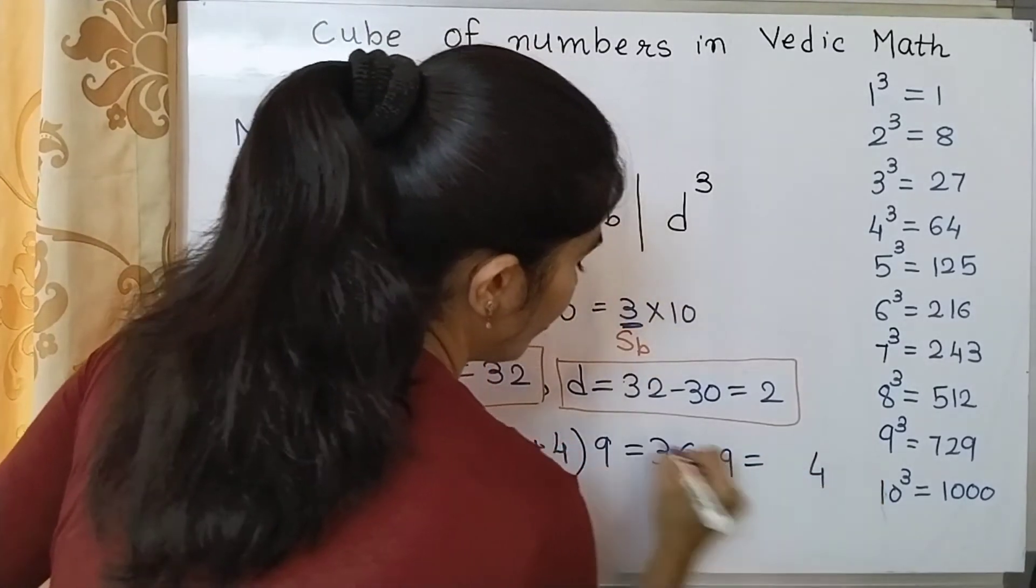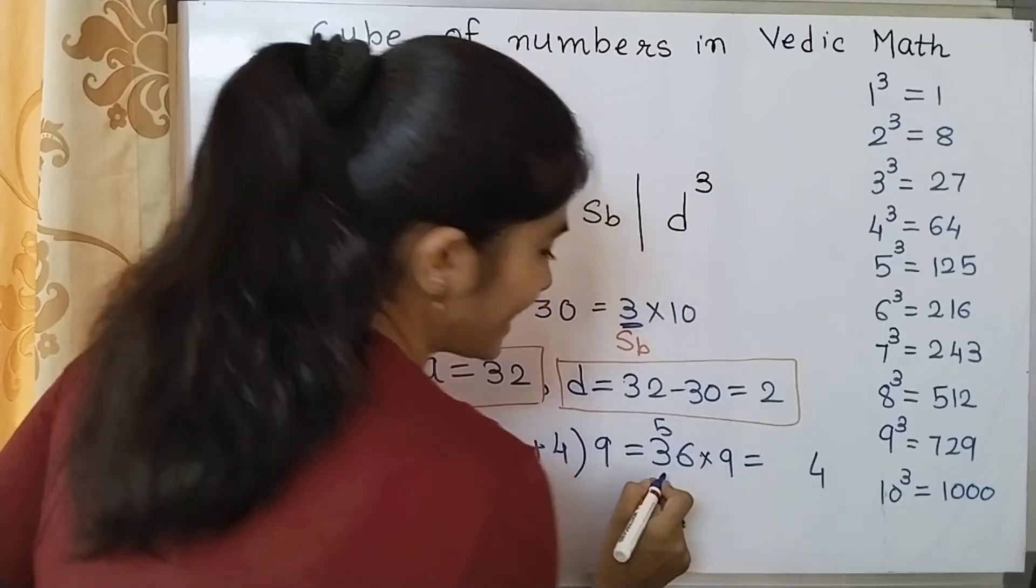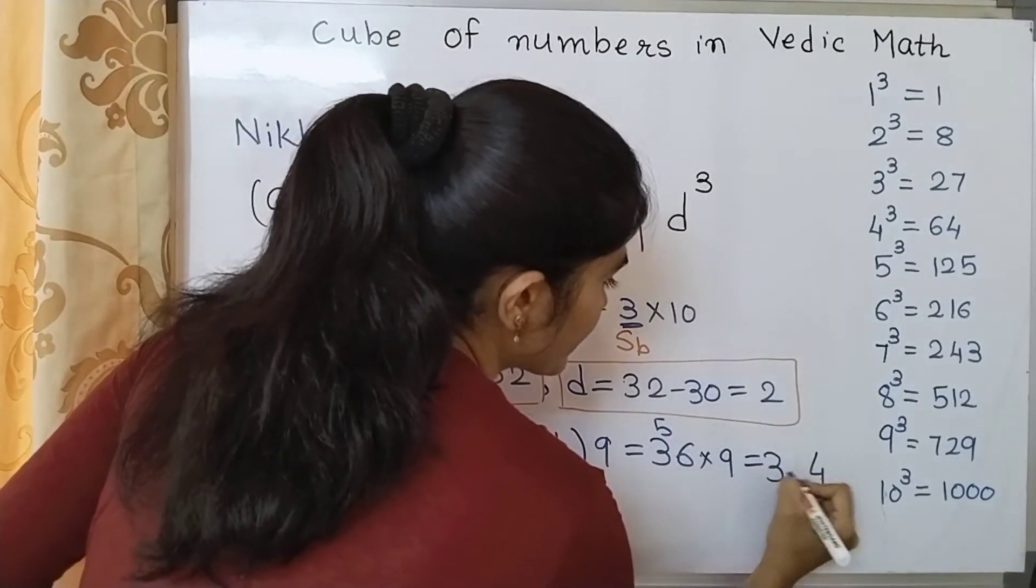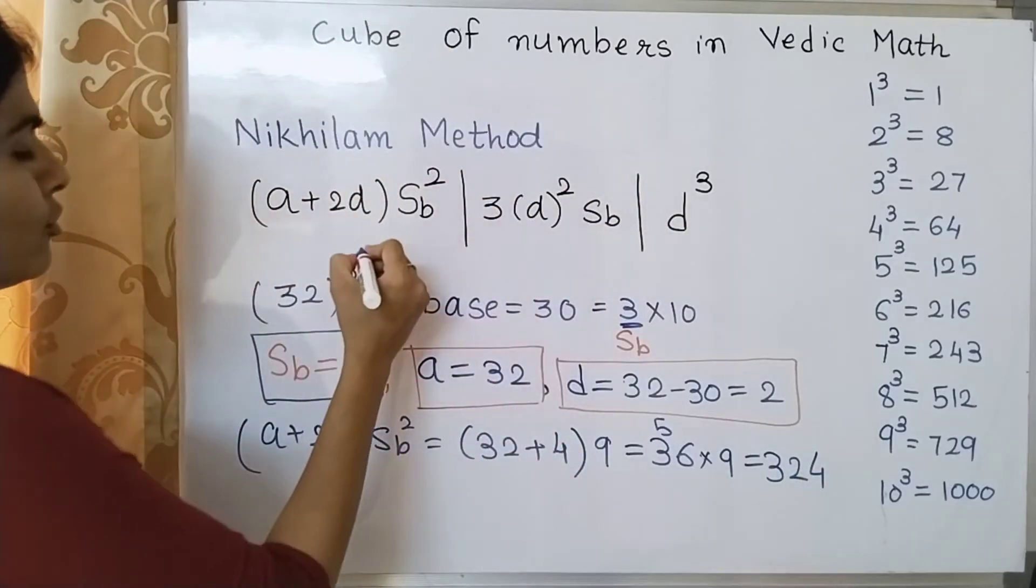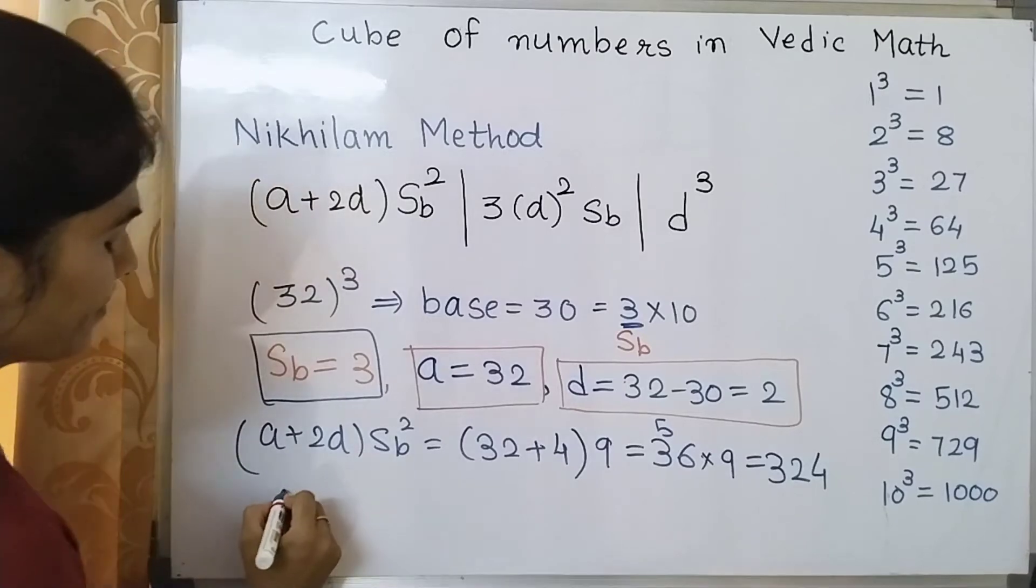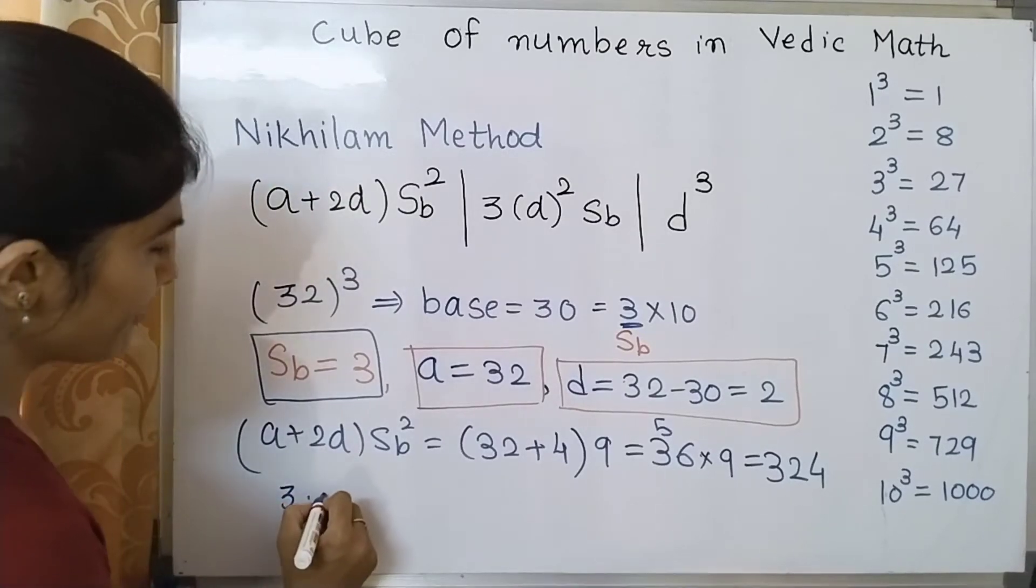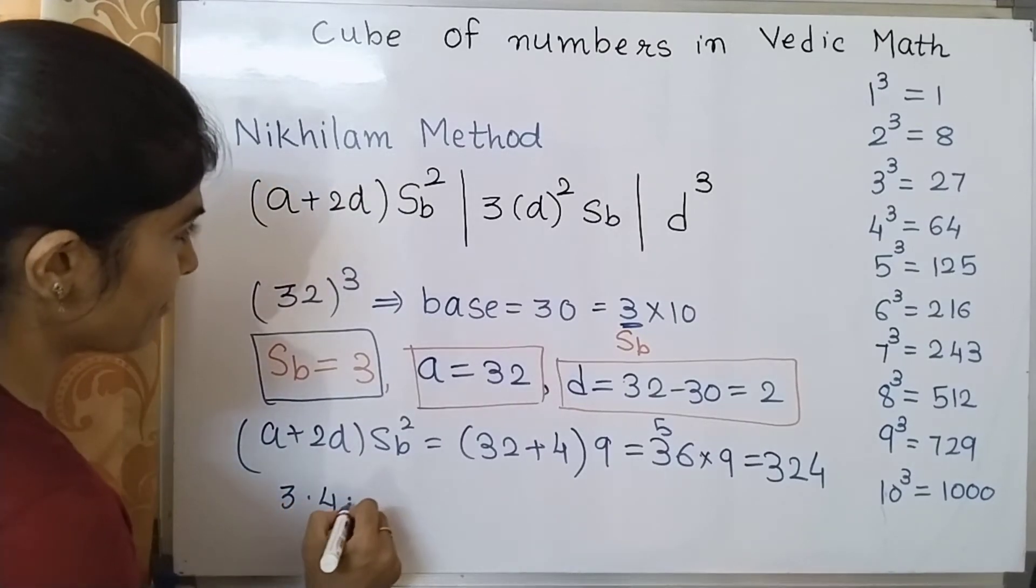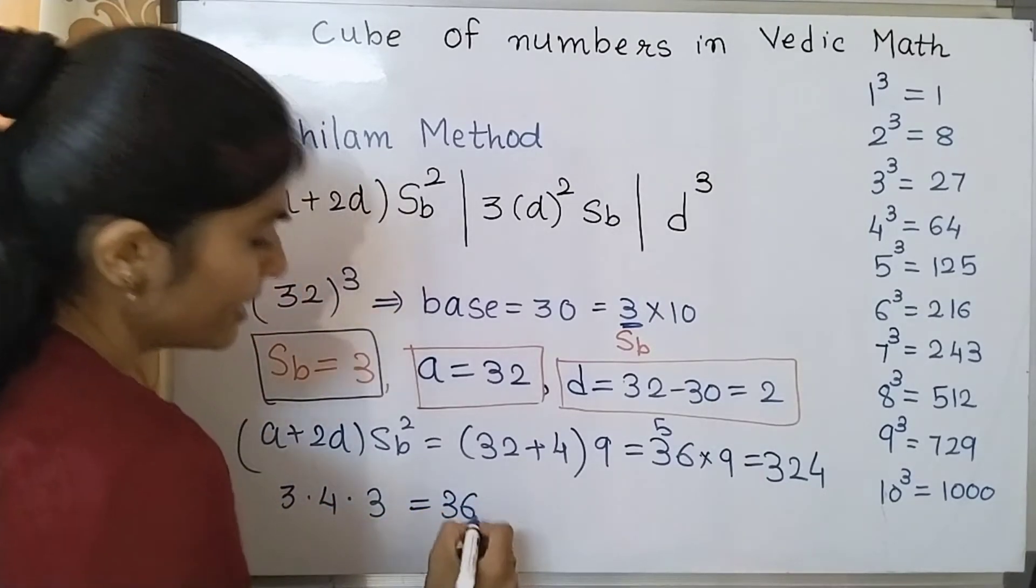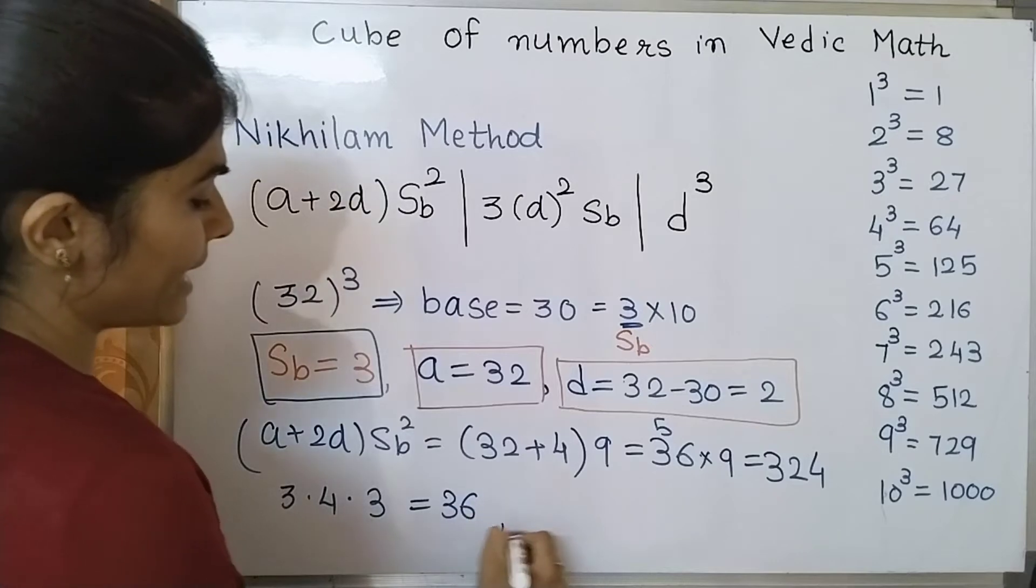So 36 times 9 is 324. This is my first term. Second term is 3 times b squared, so 3 times square of the deviation which is 4 and sub base is 3. So 3 fours are 12, 12 fours, 3s are 36. Second term is 36 and d cube, d is 2, so b cube is 8.